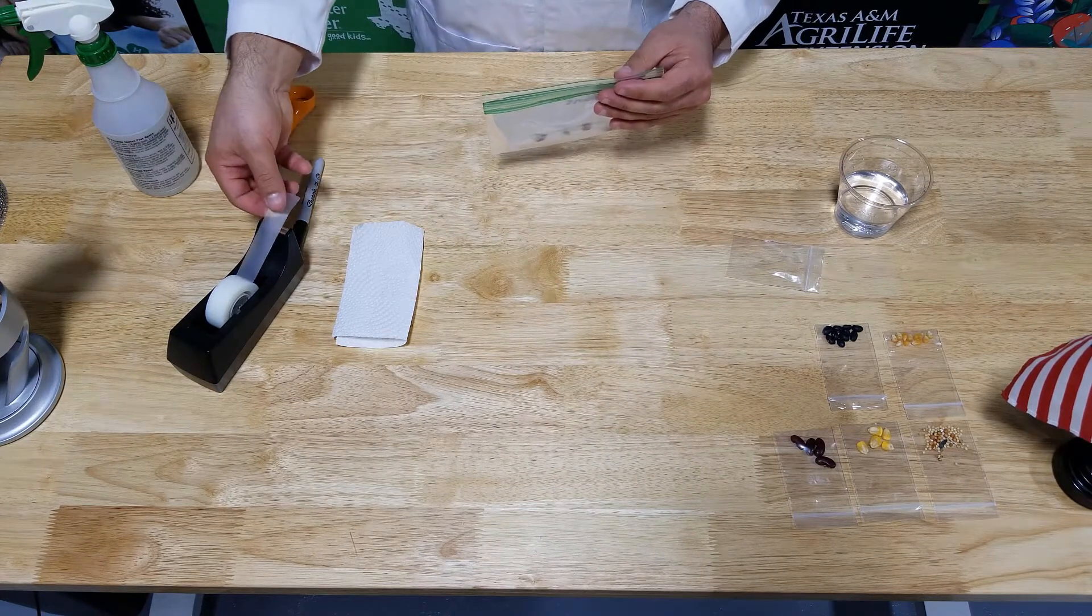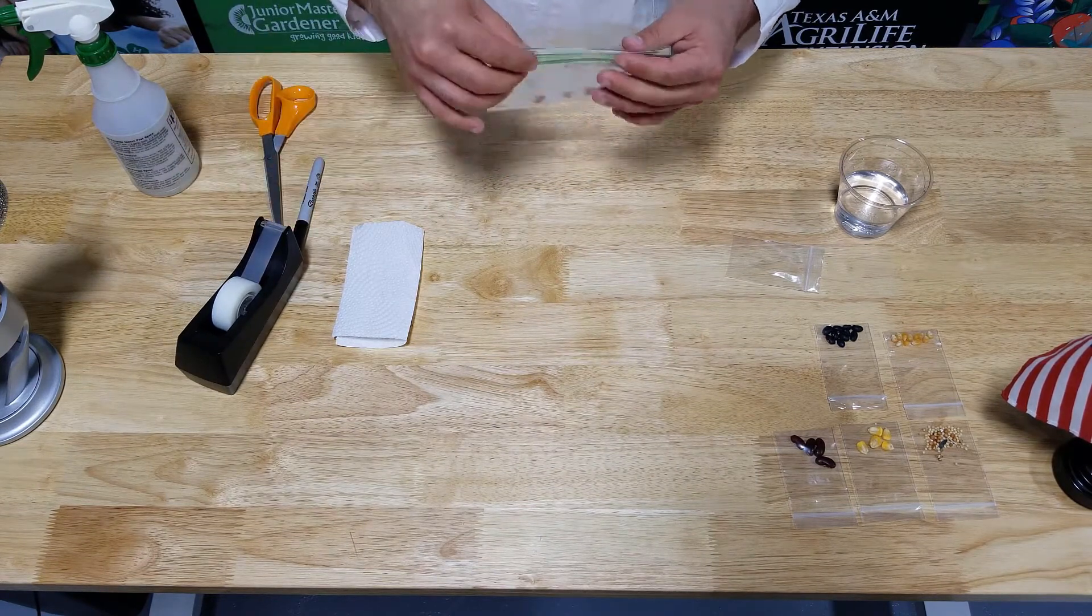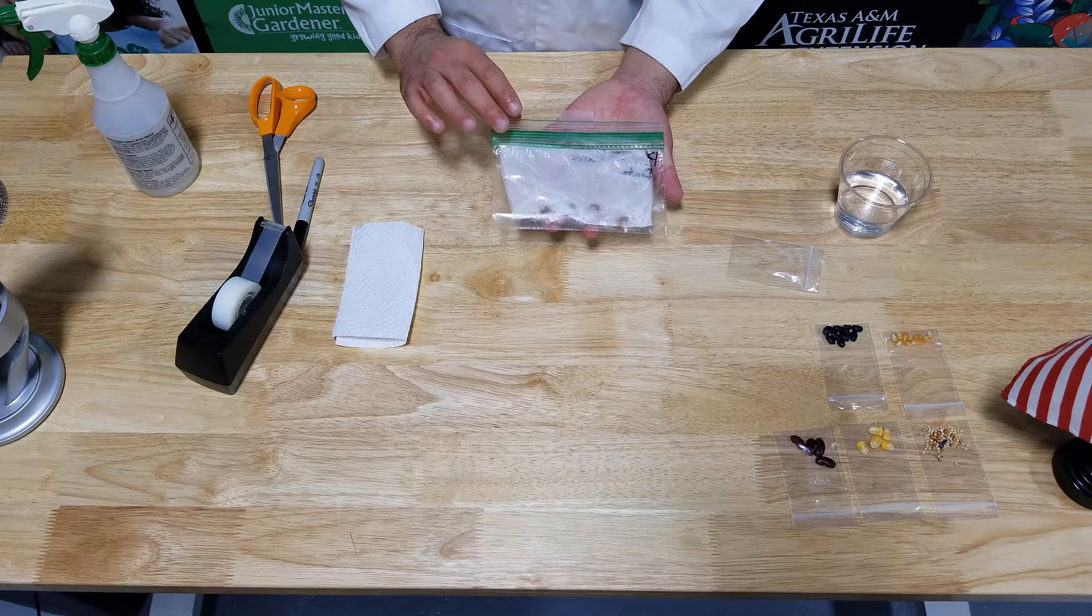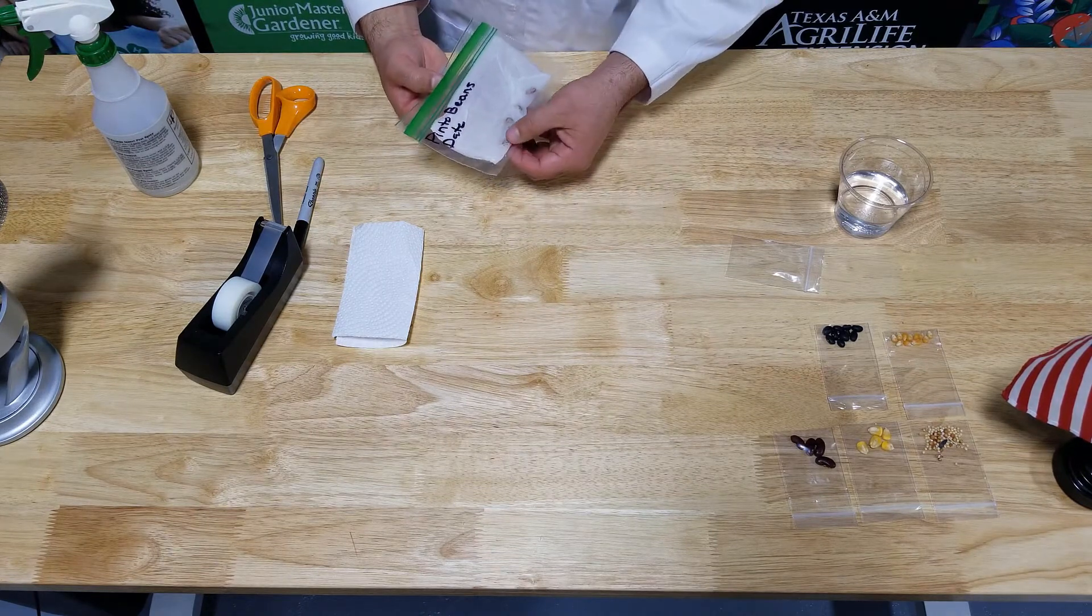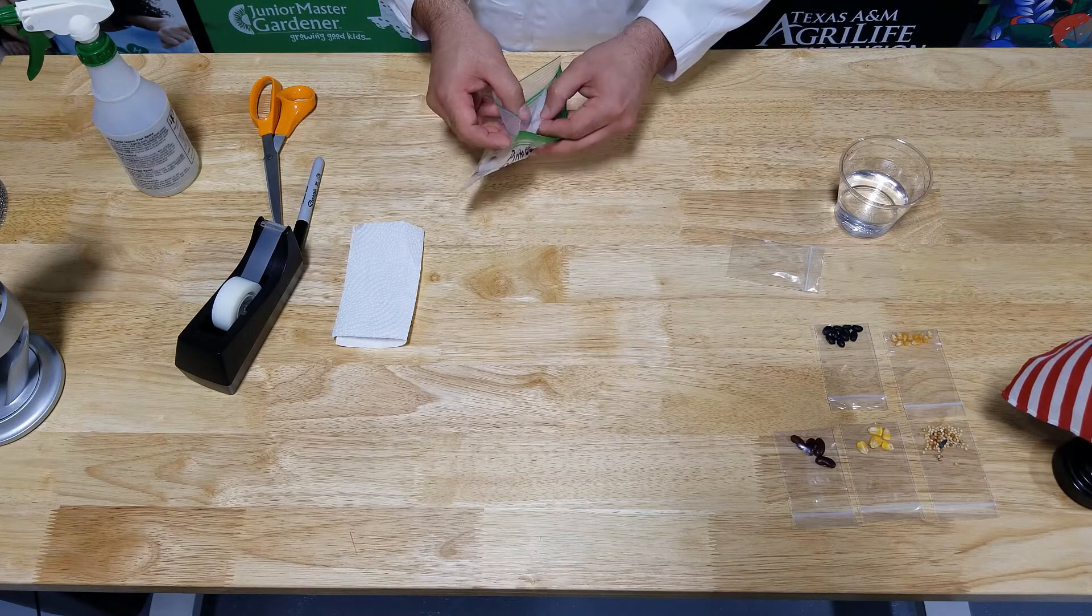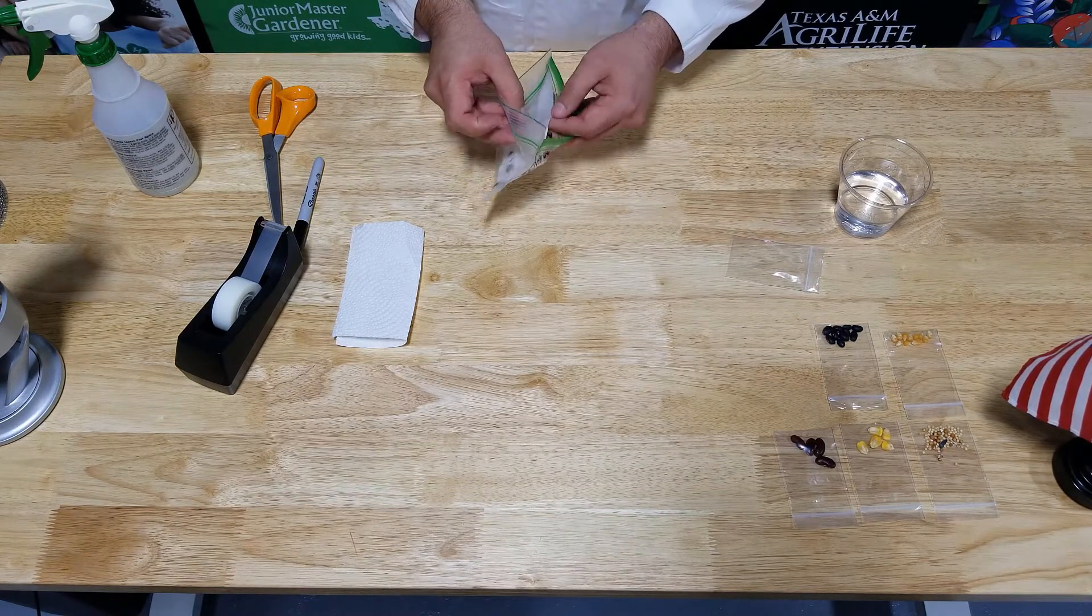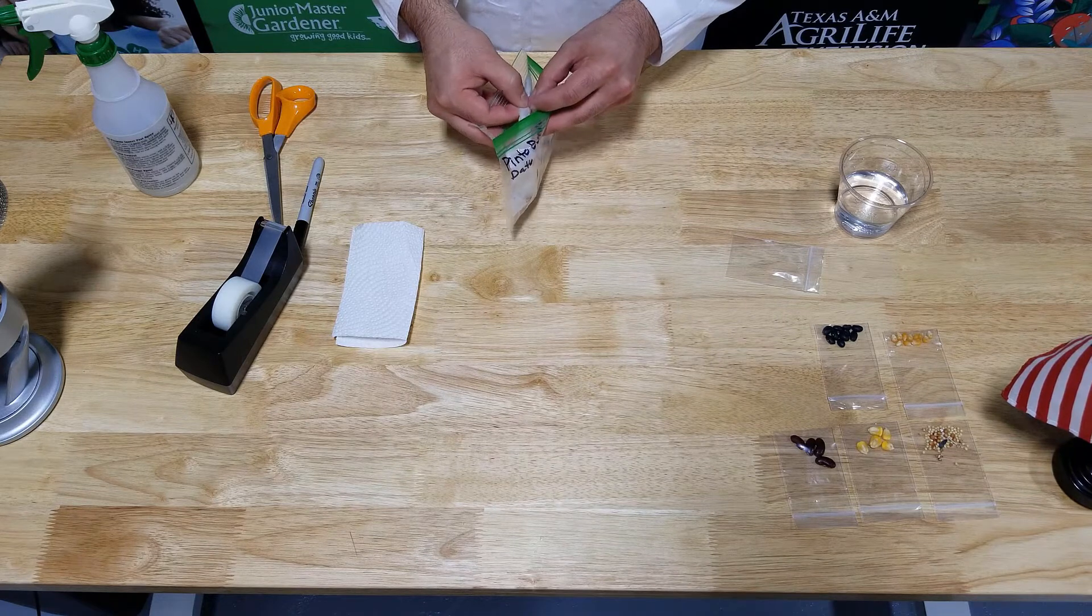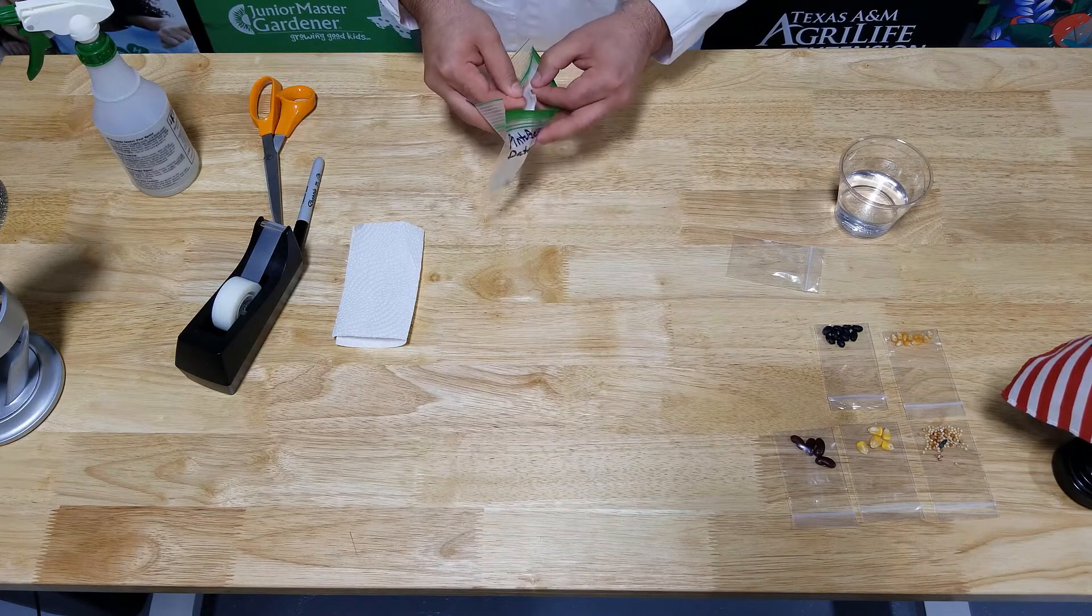Then take some tape, you can stick that bag on your window. Every day you can come in and check, see if your seeds have grown. We can even kind of peek in there if we want. We can open up our paper towel a little bit to see what the seeds look like.